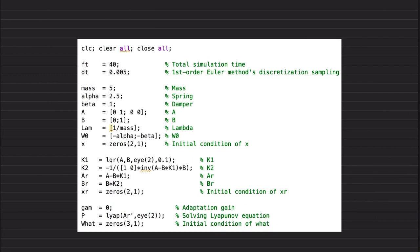When you hit the run button, you're going to generate exactly the same results that I generate. Total simulation time is 40 seconds. This is the first-order Euler method's discretization sampling, 0.005 seconds.